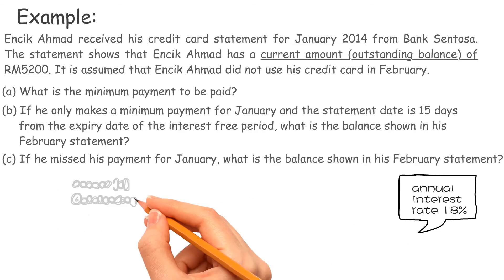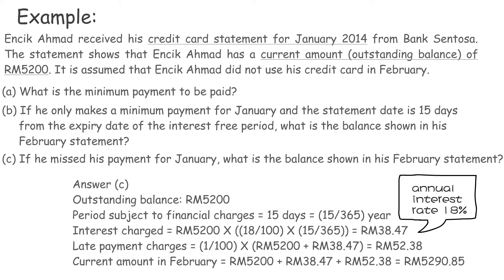Answer C. Outstanding balance: RM 5,200. Period subject to financial charges = 15 days = 15/365 year. Interest charged = RM 5,200 × (18/100) × (15/365) = RM 38.47. Late payment charges = (1/100) × (RM 5,200 + RM 38.47) = RM 52.38. Current amount in February = RM 5,200 + RM 38.47 + RM 52.38 = RM 5,290.85.